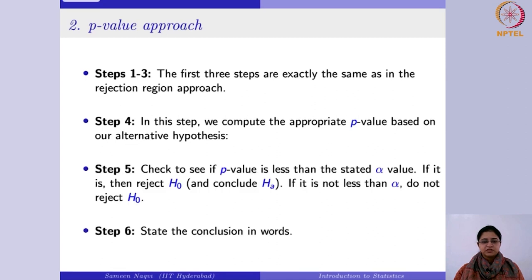You find the appropriate critical value based upon the alternative hypothesis. Here, if the p-value that you have computed is less than your alpha, then you would reject the null hypothesis; and if it is not less than alpha, then you fail to reject the null hypothesis. Finally, you will conclude in your own words whatever you have observed. This is the background of both these approaches.